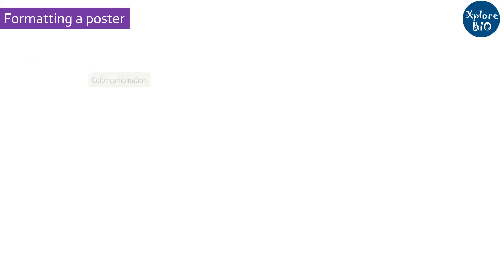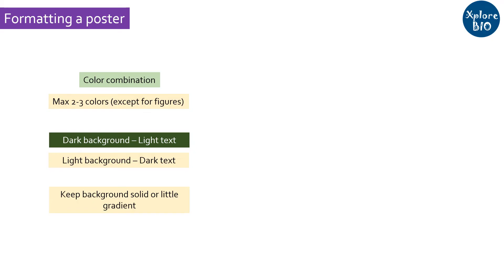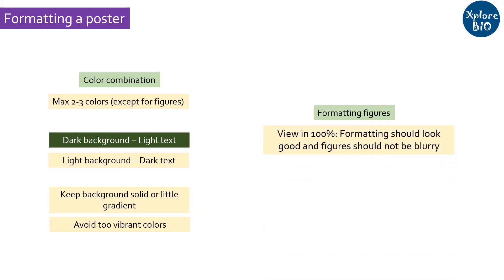A good poster uses a maximum of 2 to 3 colors, apart from figures. Choose the right color combinations: if the background is dark, use contrasting light colors for the text, and if you are using a light background, keep the text dark — this leads to better visibility. Try to keep the background solid or with a slight gradient, and avoid vibrant colors and distracting pictures. Figures should be of high resolution and should not appear blurry at 100% zoom.